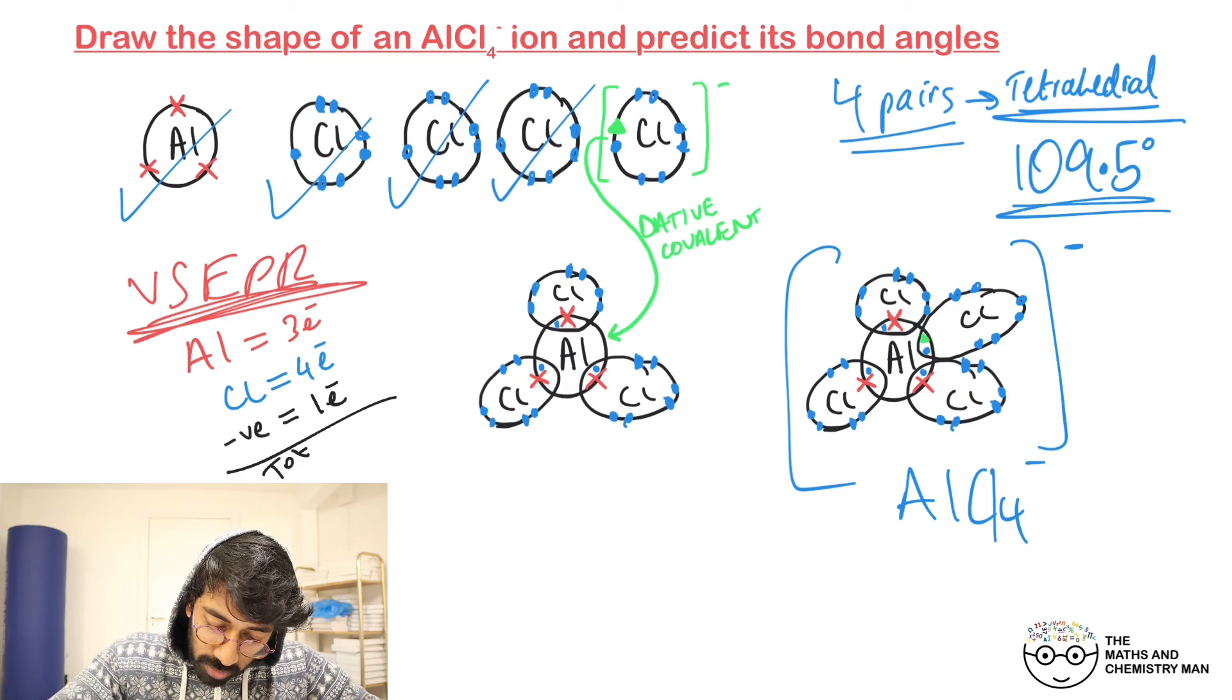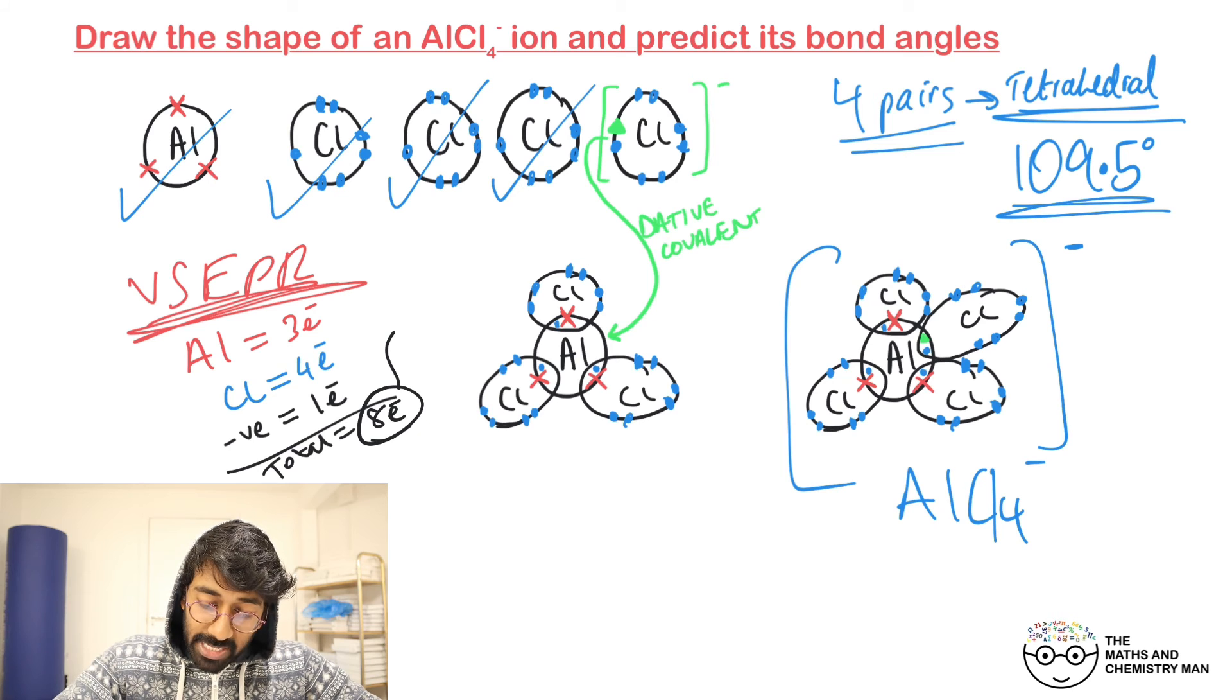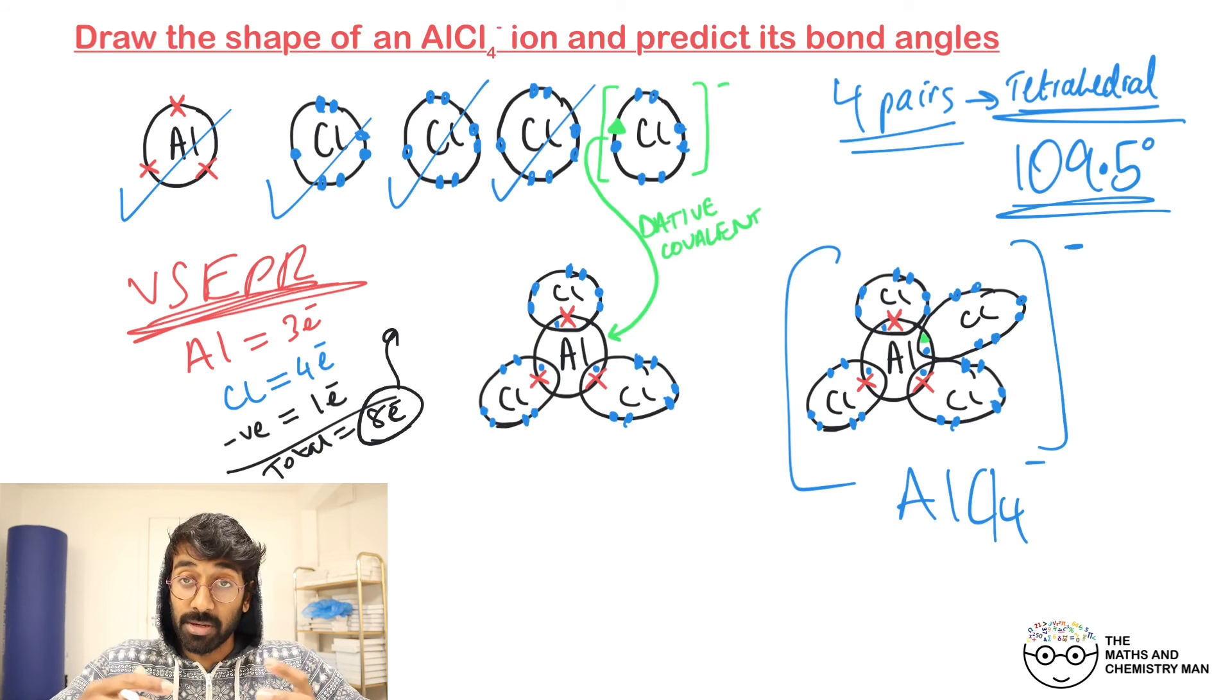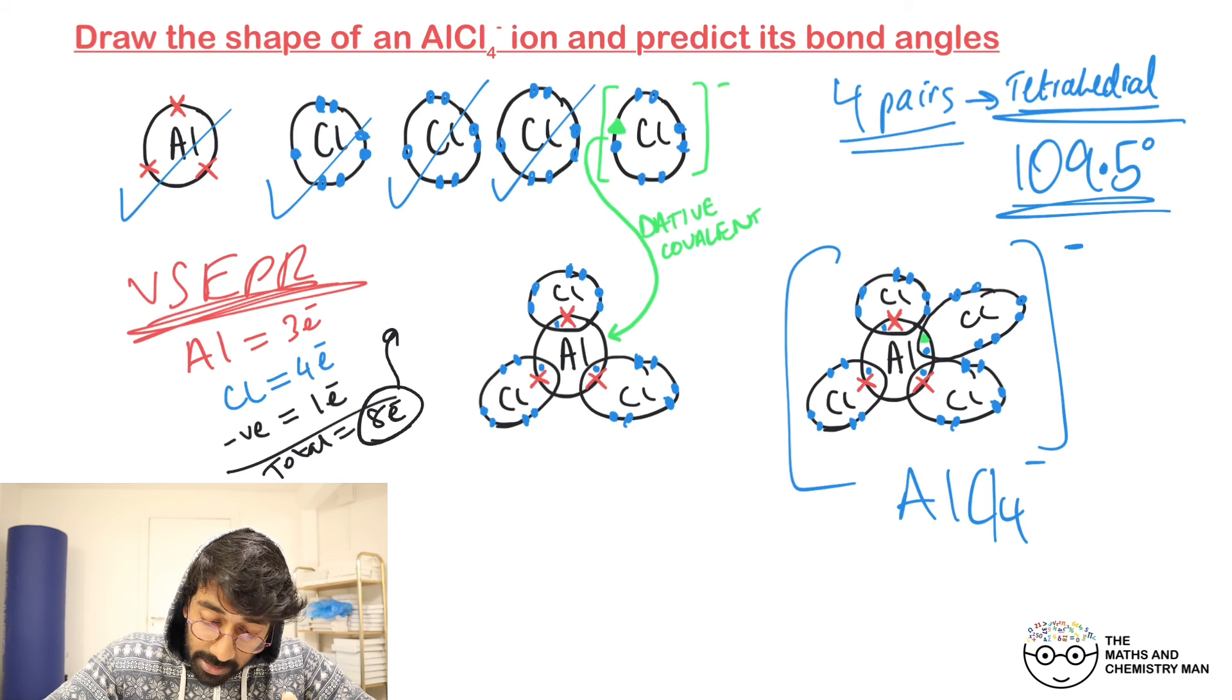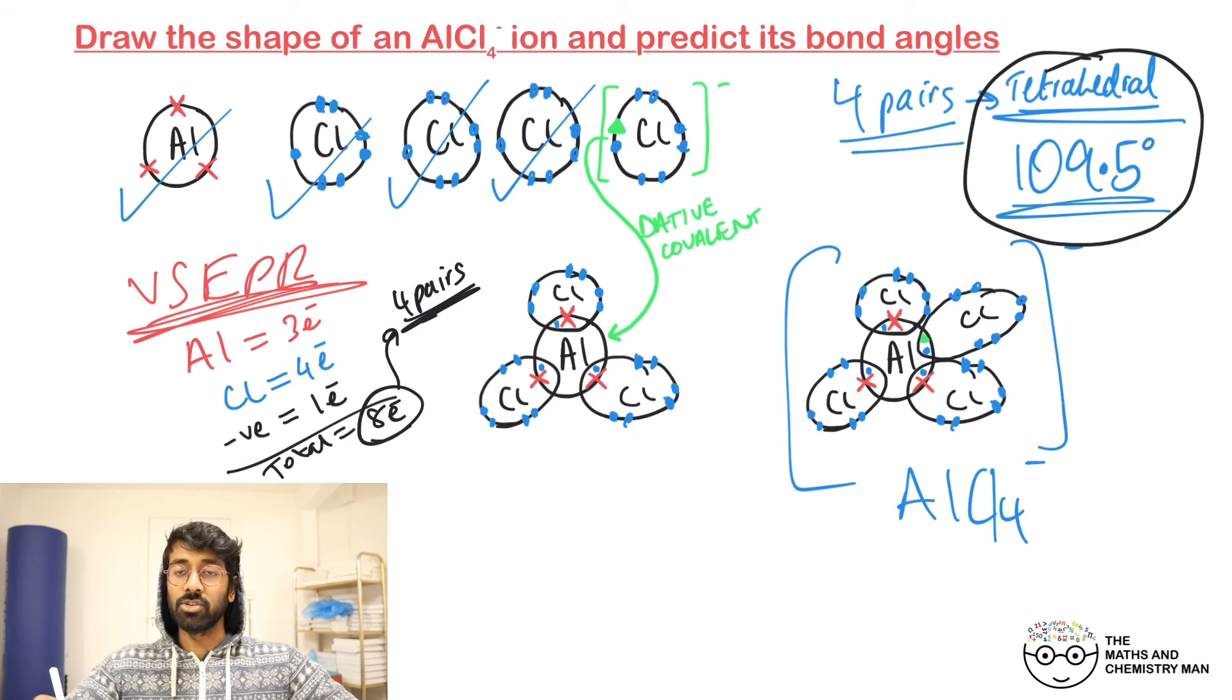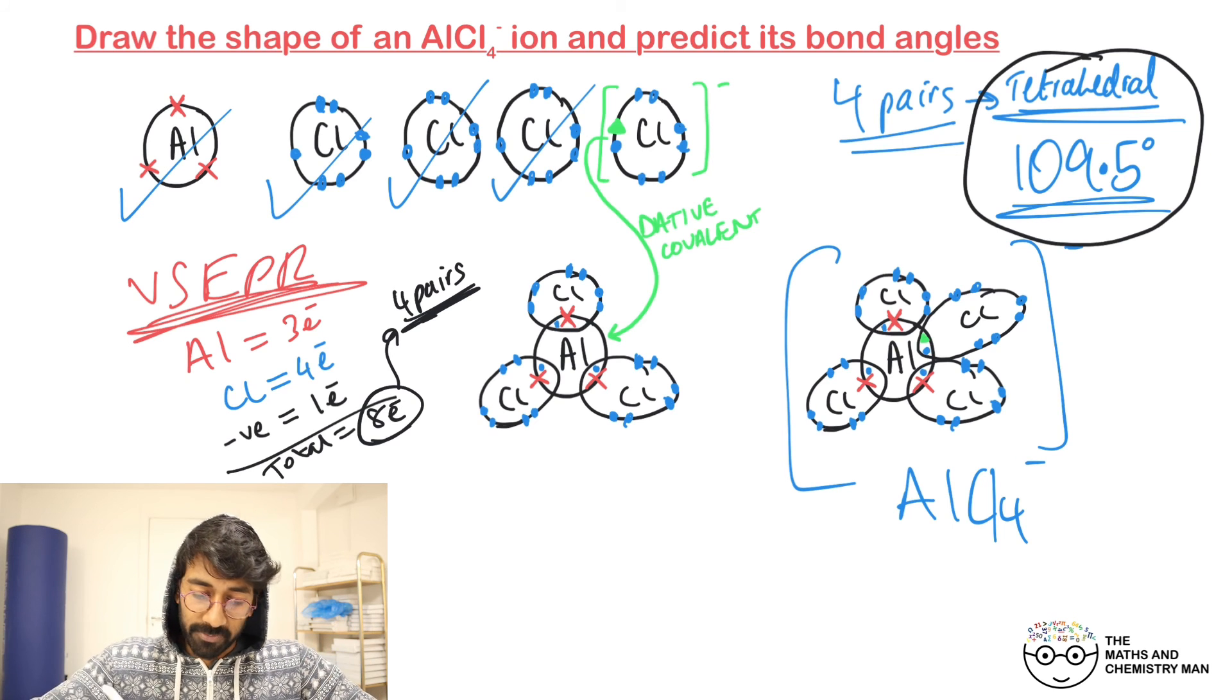If you add all of this up, we've got three, four, and one, so in total that's eight electrons around that central aluminium atom. That means there are four pairs, and therefore if there are four pairs, that leads us back to being tetrahedral and having a bond angle of 109.5 degrees. That's the VSEPR method - it avoids drawing any shapes.